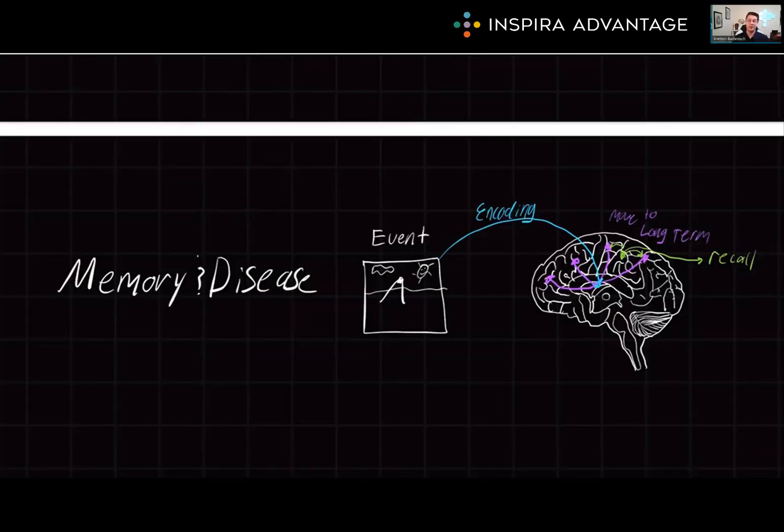Today, we will be talking about another high-yield psych-soc topic you are likely to see on the MCAT. We will be discussing the different types of memory and diseases that can affect memory, as well as the interferences that can disrupt memory formation, as well as recall.